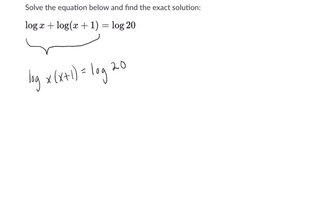All right, cool. So this can only happen, right? The log of this can only equal the log of this when x times x plus one equals 20. So that's what we're dealing with here. When does x times x plus one equal 20?